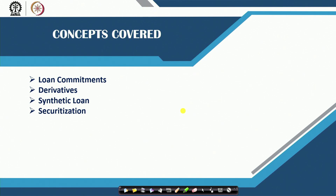In today's class we will be discussing about loan commitments and derivatives instruments which commercial banks hold. With respect to derivatives, they have developed certain unique products like synthetic loans and securitization. Today's class will also discuss other things not yet reflected in the balance sheet, but which still have significance in terms of banking performance and profitability.